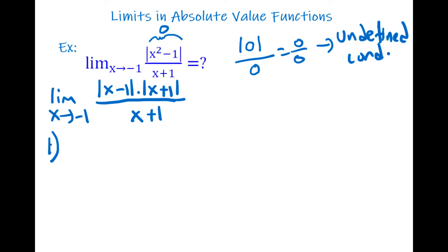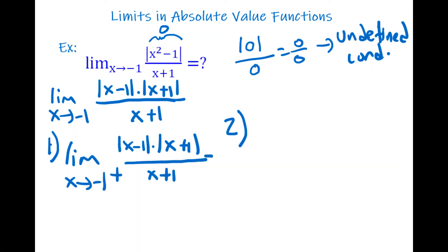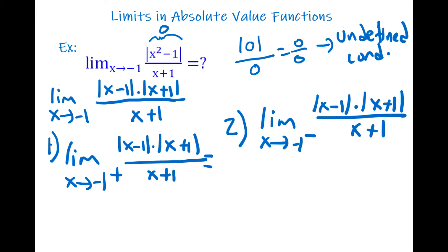We write two cases: the limit as x goes to −1 from the right, and the limit as x goes to −1 from the left. Let's examine the first case. Approaching −1 from the right means taking a value slightly bigger than −1, like −0.9.